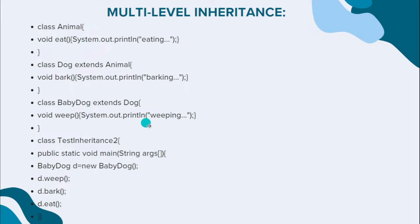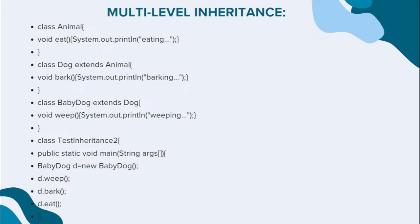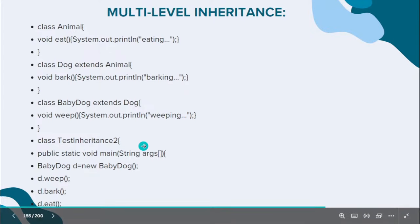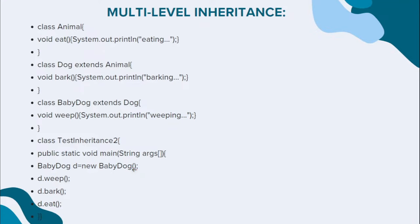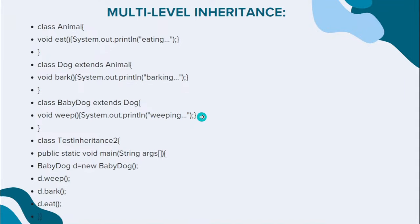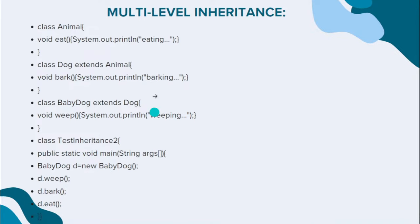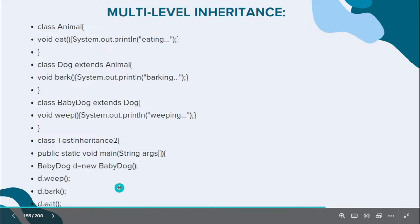Inside BabyDog I define a weep method — system.out.println 'weeping'. In the test class with the main method, I create BabyDog d = new BabyDog(). Using object d, I call d.weep(), d.bark(), and d.eat() — all methods from the chain. Dog extends Animal, and BabyDog extends Dog. Whenever a chain of inheritance happens, this is called multi-level inheritance.